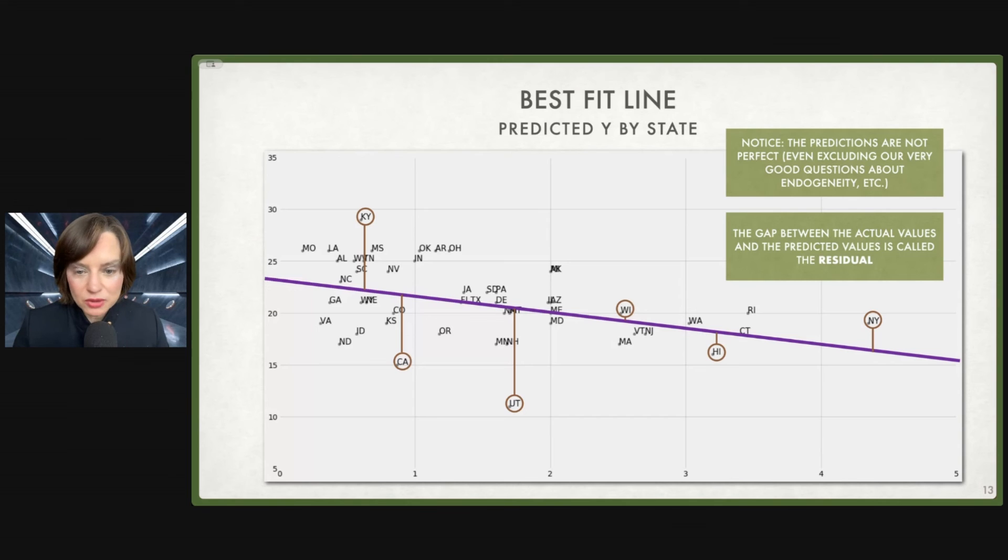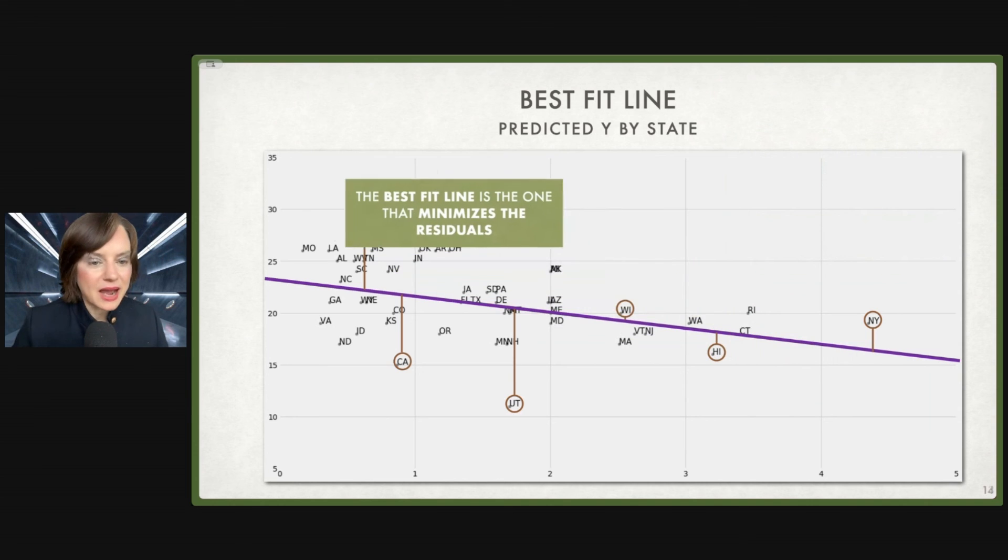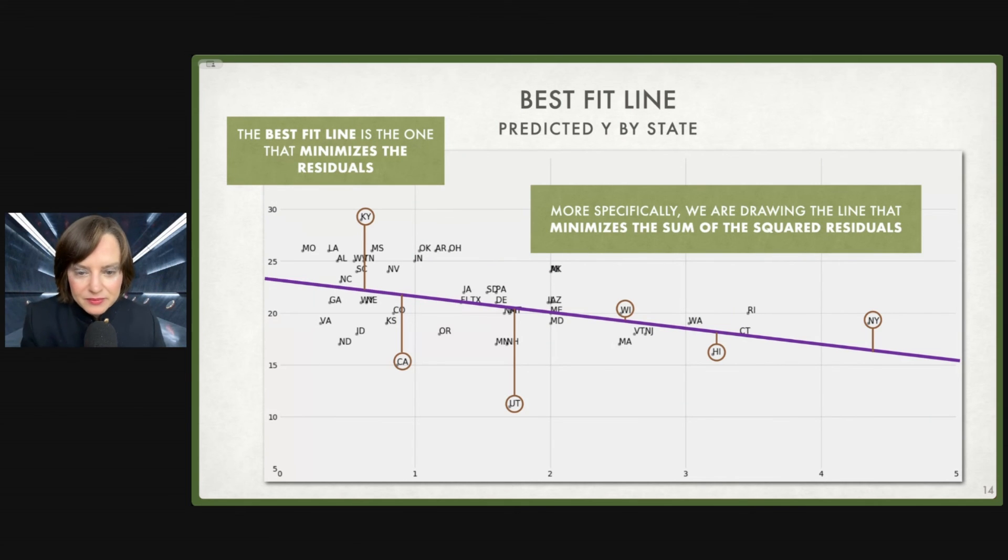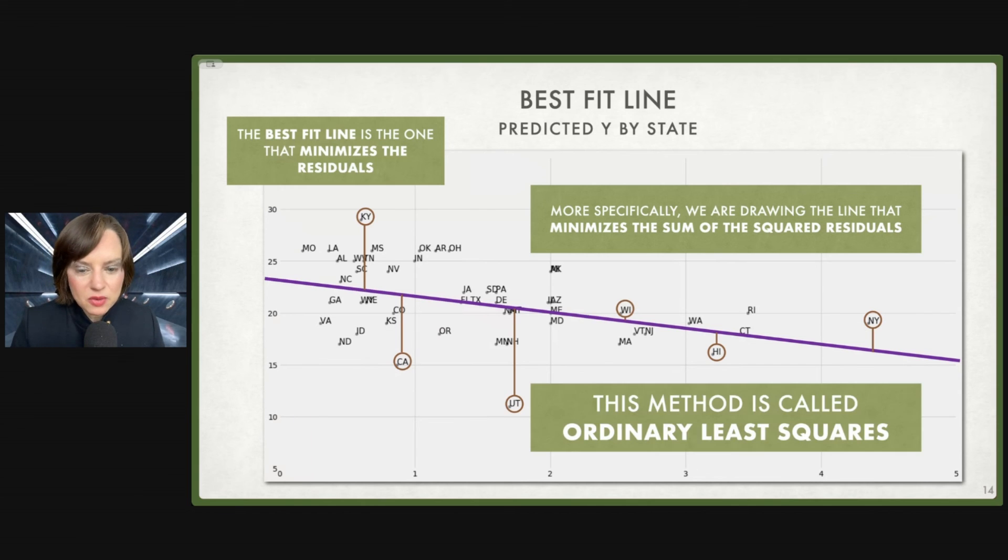Real terminology for you, the gap between the actual values, the ones that I've circled, and the predicted values in our best fit line is called the residual. You will see that term all over the place. That is what the residual is, the gap between the actual data and the best fit line. Now, you've been wondering how am I going to actually draw the best fit line? Therein lies the magic of OLS, ordinary least squares. The best fit line is the one that minimizes the residuals. We are looking for the line that minimizes the gap between our actual and that particular line. More specifically, we are drawing the line that minimizes the sum of the squared residuals.